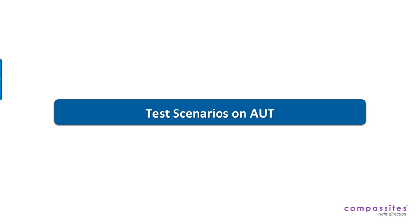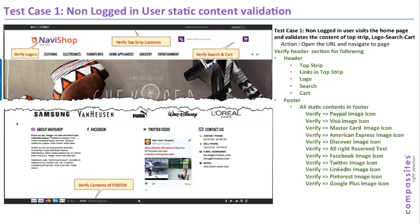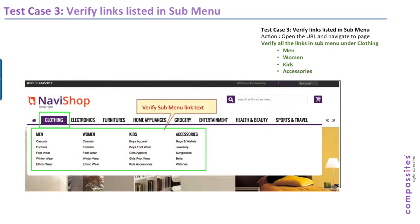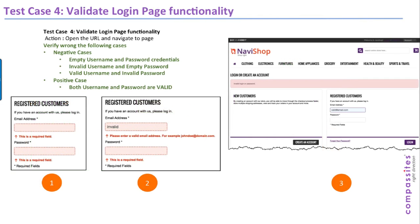Now let's discuss the scenarios we are going to execute. The first test case validates the logo, verifies the top strip, and checks the contents of search, cart, and footer. The second test case navigates to the website and validates all the headers — here we have intentionally seeded a defect to see how RAFT captures it and shows the error to the user for easy identification. The third test case validates all the links in the clothing menu and that each sub-menu navigates to the relevant pages.